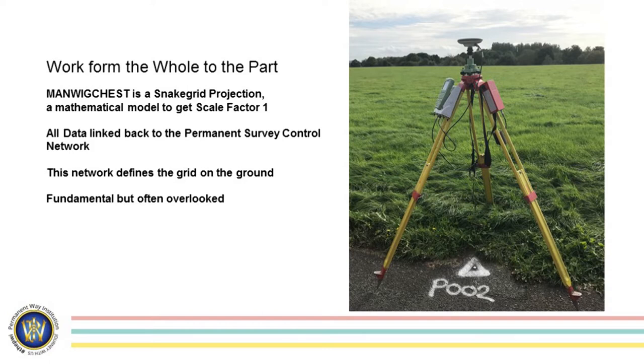Before going to mobile data technologies — all the cutting edge tech and really interesting stuff — starting from the whole to the part: establish the survey control, primary, secondary, tertiary, get that in the ground and coordinated. Manwig Chest 18 is a projection, it's just a mathematical model. It's that nail in the ground that defines your survey grid. For repeatability, when we're talking about BIM and you want data through the project life cycle, you need the nails in the ground before you start running ahead to do the survey and the design. Fundamental but often overlooked — if you rush to OS grid, get the data out and start the design, then work back to snake grid, it gets messy and causes a headache.